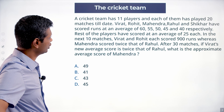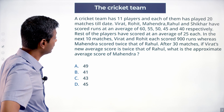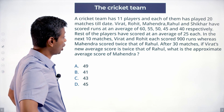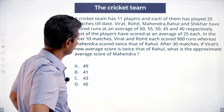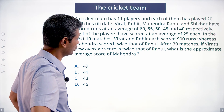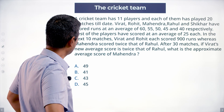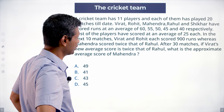A cricket team has 11 players and each of them has played 20 matches till date. Virat, Rohit, Mahindra, Rahul and Shikhar have scored runs at an average of 60, 55, 50, 45 and 40 respectively. The rest of the players have scored an average of 25 each.